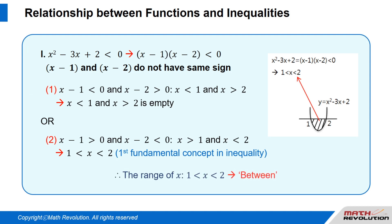Therefore, the range of x becomes 1 is smaller than x which is smaller than 2 — that is, x is between 1 and 2 — as shown by the figure above.